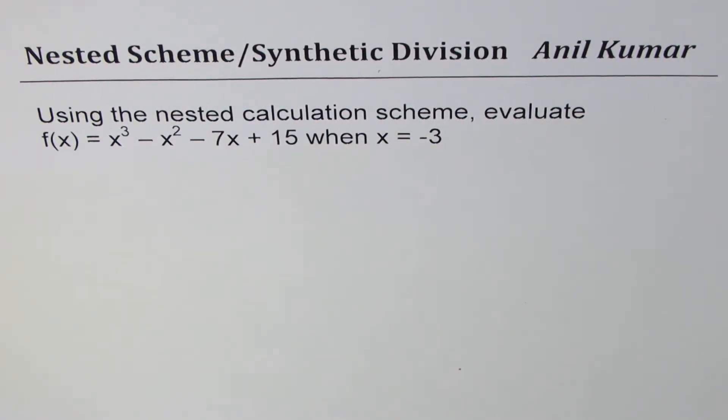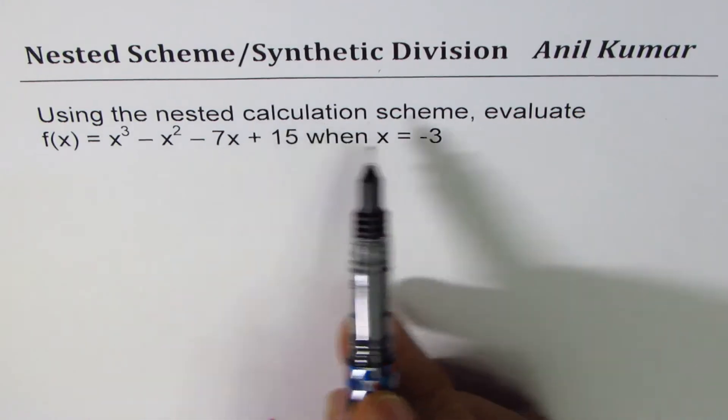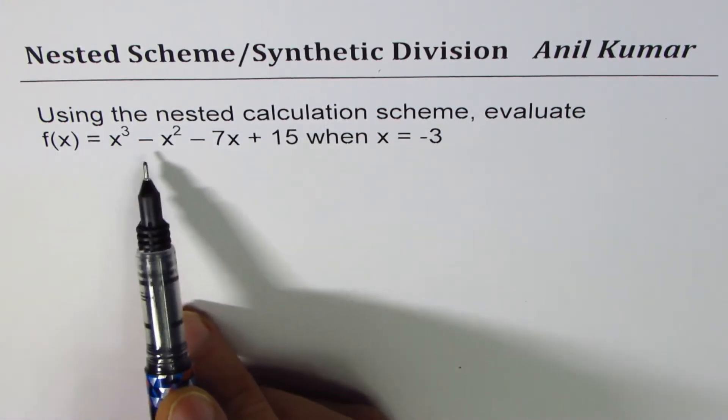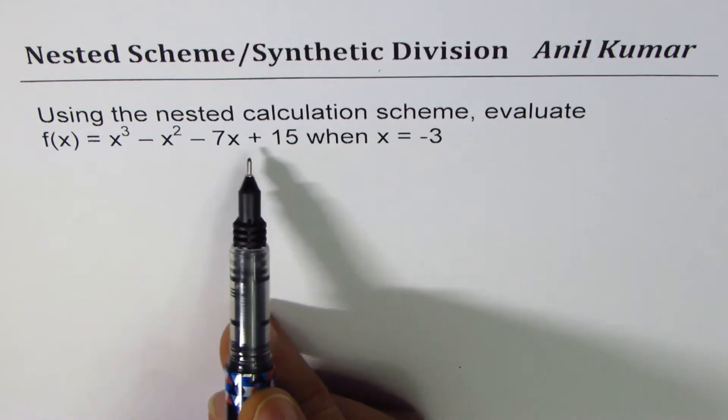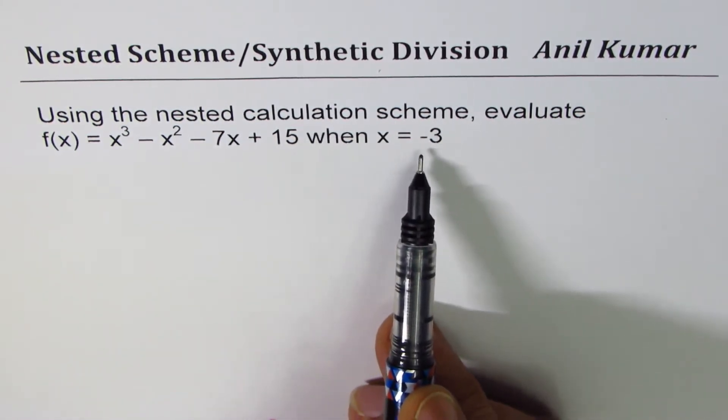I'm Anil Kumar and in this video we'll discuss nested scheme. The question is: using the nested calculation scheme, evaluate f(x) = x³ - x² - 7x + 15 when x = -3.